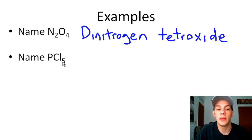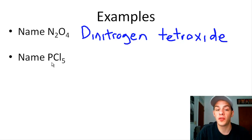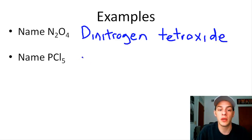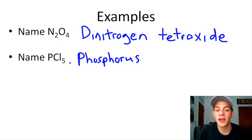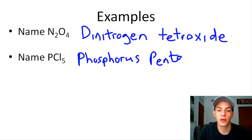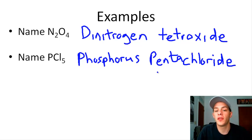The next example asks us to name PCl5. We have one phosphorus atom, and since this is our first element, we don't use the prefix mono — it's just phosphorus. Then we have five chlorine atoms, and the prefix for five is penta. So this is phosphorus pentachloride.